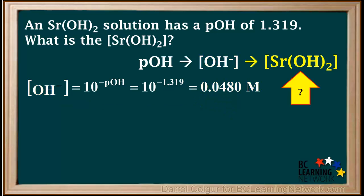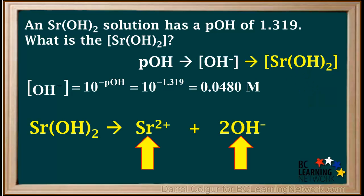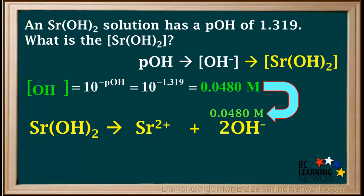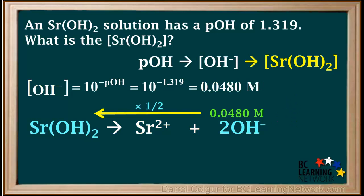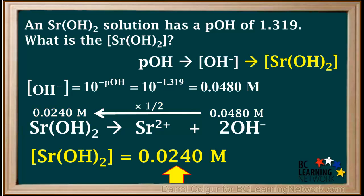Our next step is to find the concentration of Sr(OH)₂ as a whole. We write the balanced dissociation equation for strontium hydroxide: one Sr(OH)₂ produces one Sr²⁺ ion and two hydroxide ions. The hydroxide ion concentration is 0.0480 molar, and the mole ratio of Sr(OH)₂ to OH⁻ is 1 to 2. So the concentration of Sr(OH)₂ is 0.0480 × (1/2), which equals 0.0240 molar.